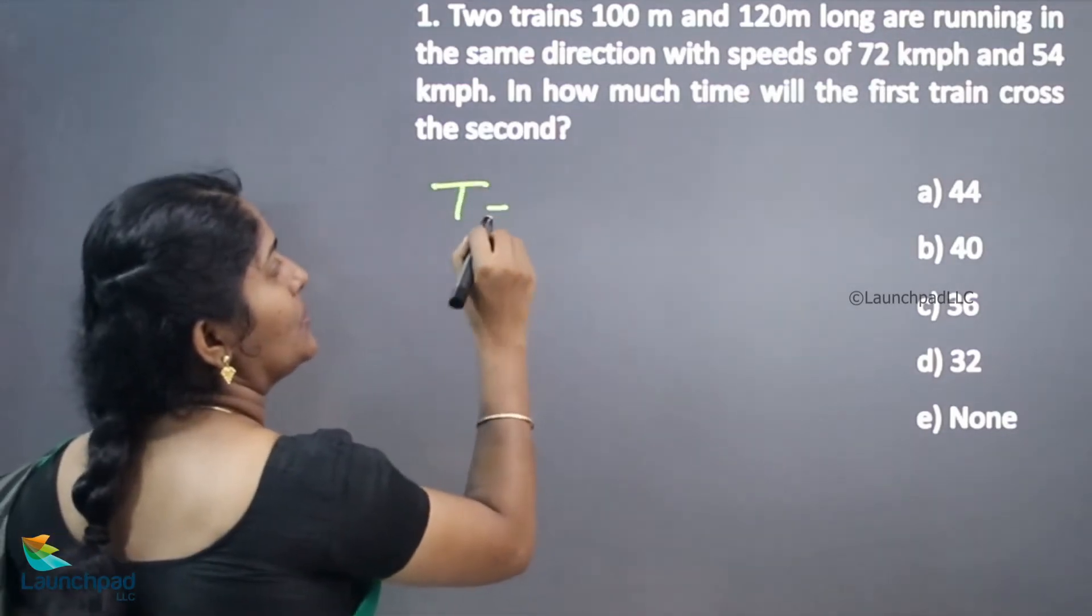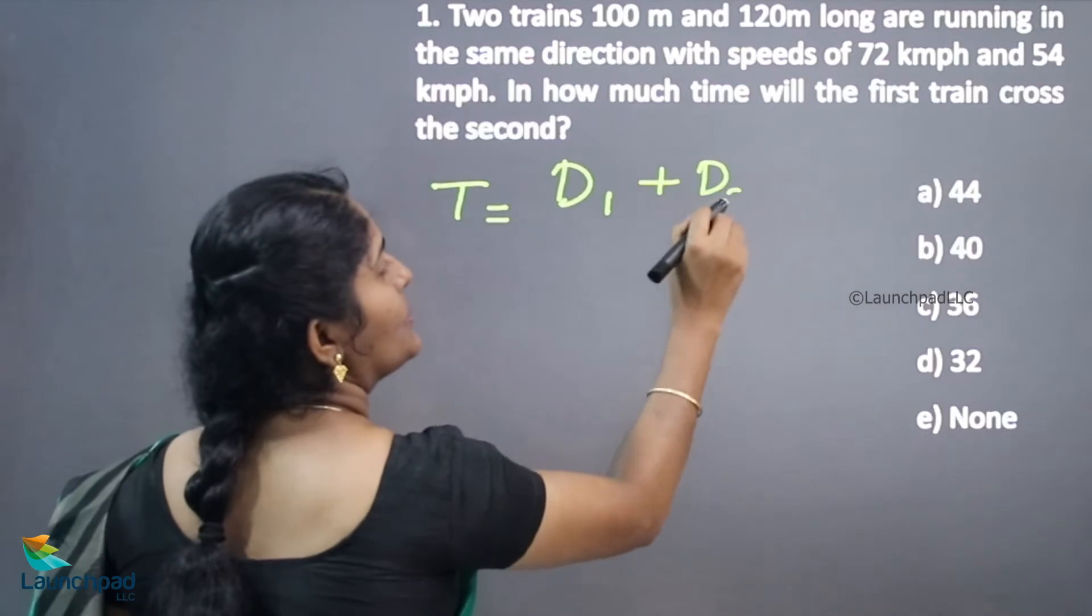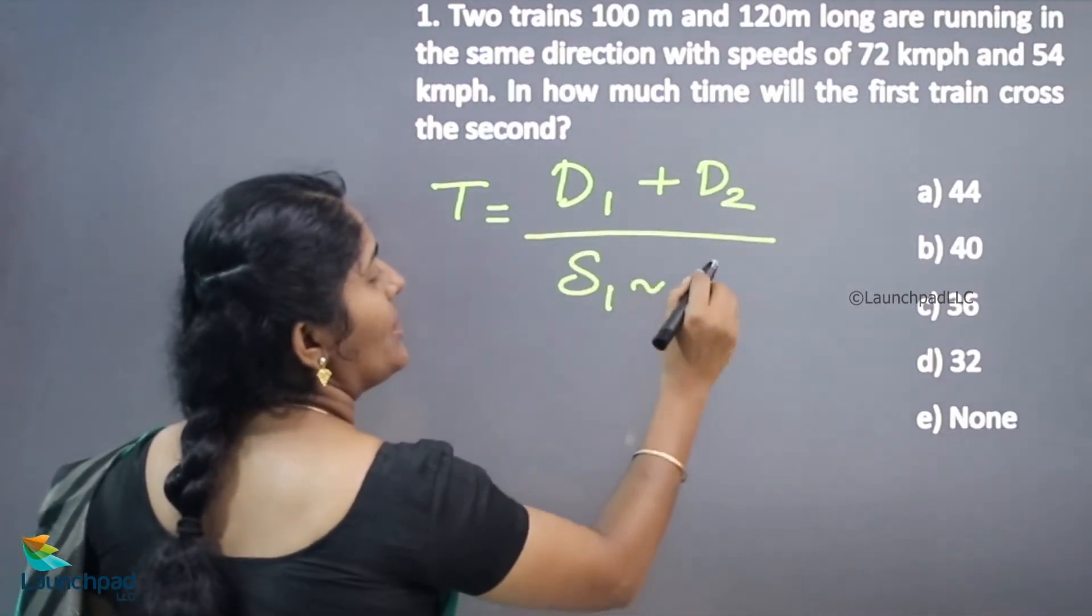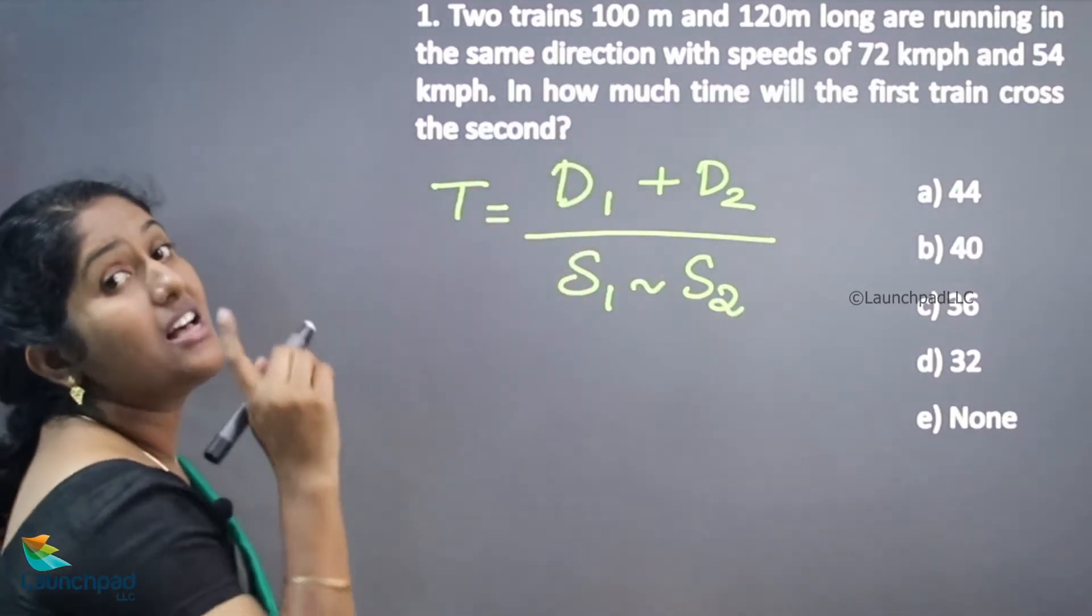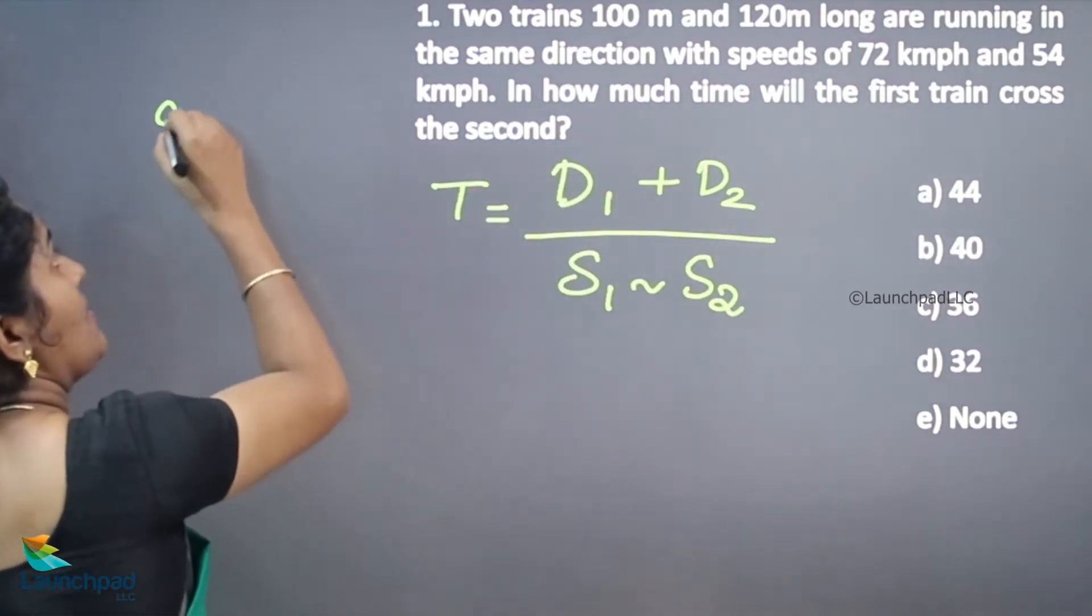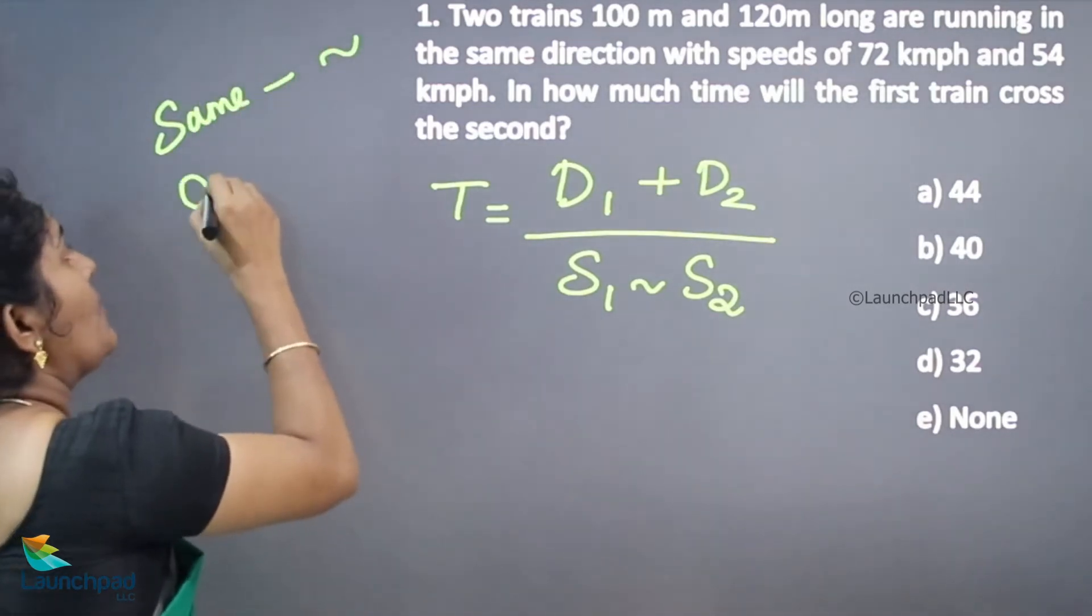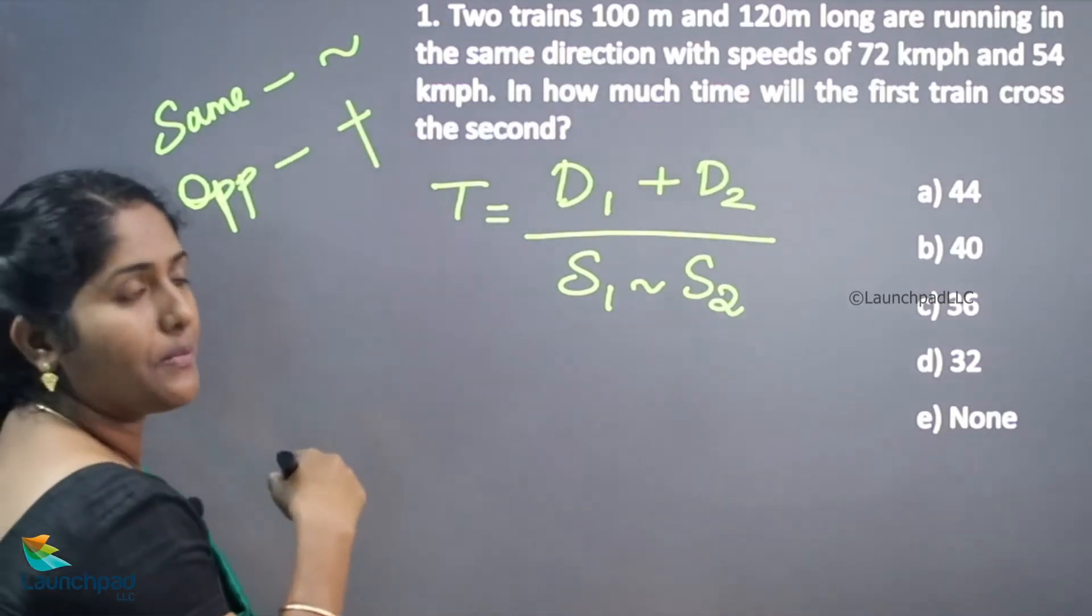So time equals distance of train 1 plus distance of train 2 divided by speed of train 1 difference speed of train 2, because the speed is in the same direction. If it is same direction means we should consider the difference of the speed. If it is opposite direction means we want to add both these speeds.